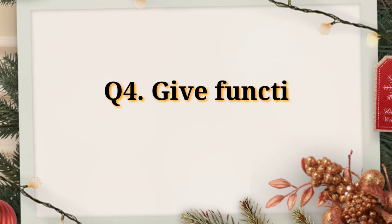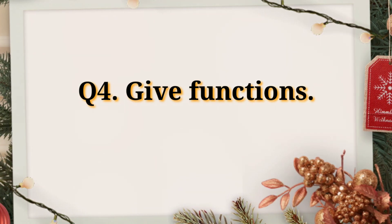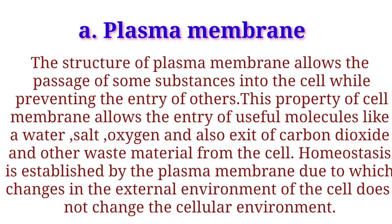Question 4: Give the functions of the Nucleus and Plasma Membrane. A. Plasma Membrane: The structure of the plasma membrane allows the passage of some substances into the cell while preventing the entry of others. This property allows the entry of useful molecules like water, salt, and oxygen, and also the exit of carbon dioxide and other waste material from the cell. Homeostasis is established by the plasma membrane, so changes in the external environment do not change the cellular environment.